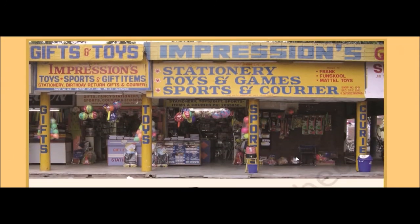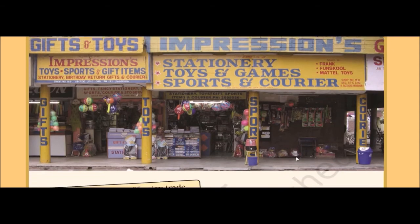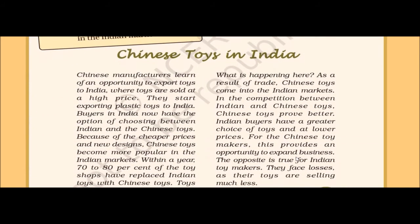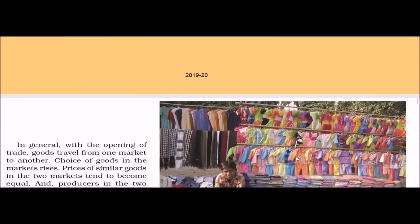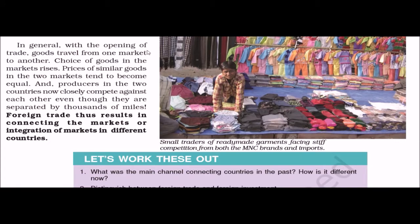For example, in India, toy shops have seen 70 to 80 percent of Indian toys replaced by Chinese toys within a year. When trade opens up, goods travel from one market to another, the choice of goods rises, and prices of similar goods in two markets tend to become equal. Producers in two countries now closely compete against each other even though they are separated by thousands of miles.